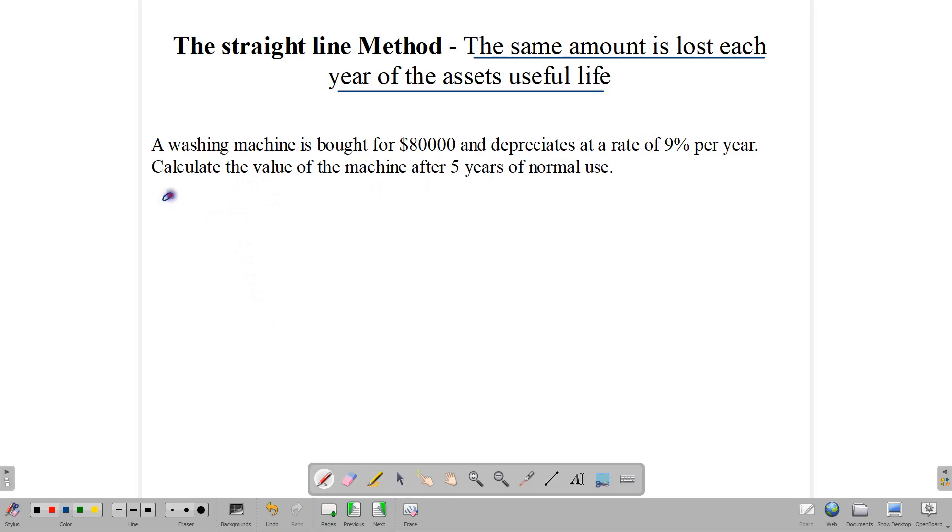Since we are going to be losing 9% per year, we're going to calculate our 9%. So 9 over 100 multiplied by $80,000, and dividing here gives us 9 times 800, and that gives us $7,200. So each year, the washing machine is going to lose $7,200 of its value. Now we are talking about five years. So in five years' time, the machine is going to lose $7,200 every year, so that multiplied by 5.